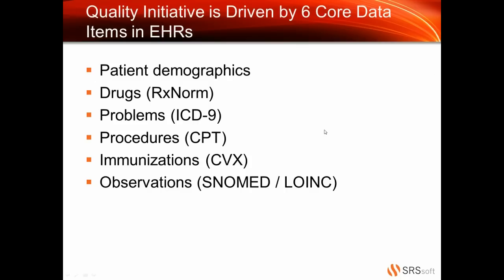First, I'd like you to get an understanding of what kind of data we're talking about. Just to really boil it down, there are six categories of data that drive all the quality initiatives. The first category is patient demographics — that's expected. But then the five others are drugs, problems and procedures, immunizations, and a catch-all that we call observations.